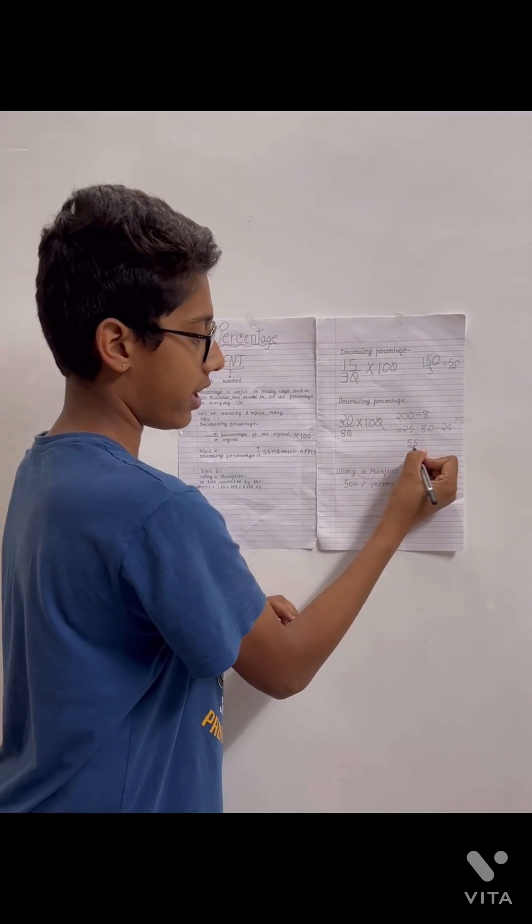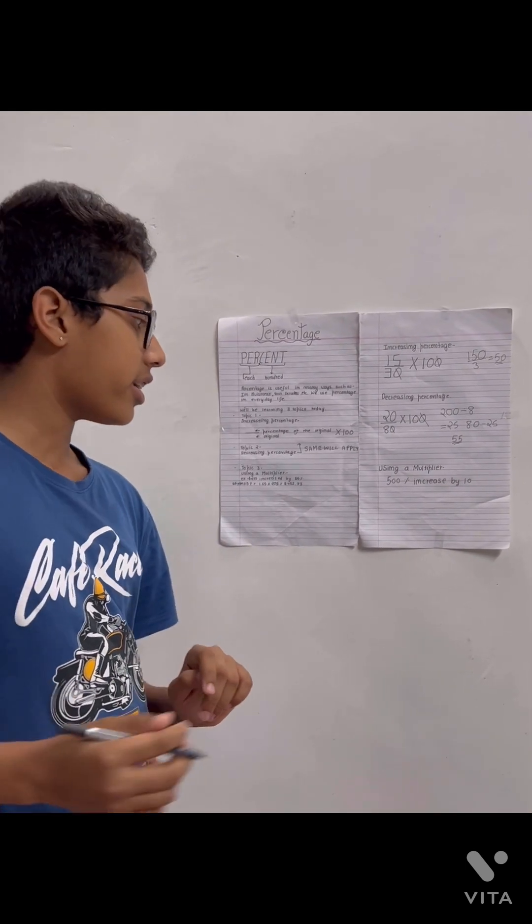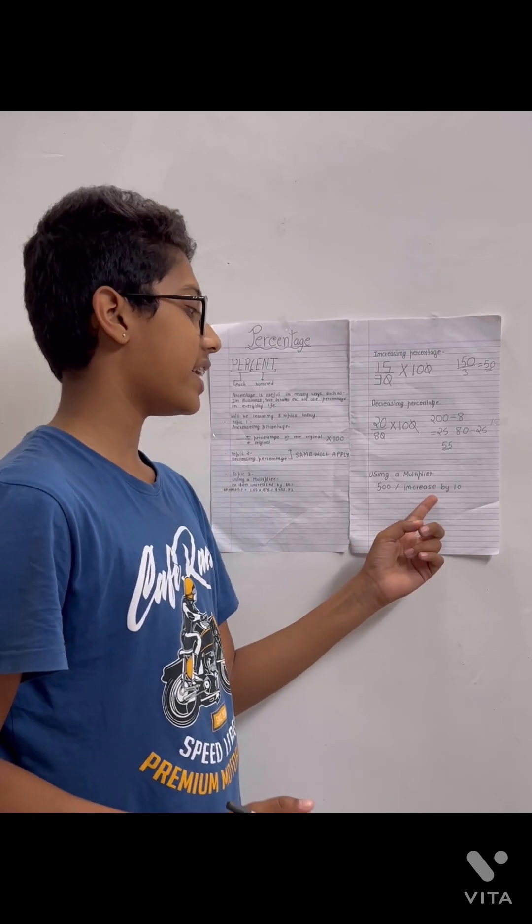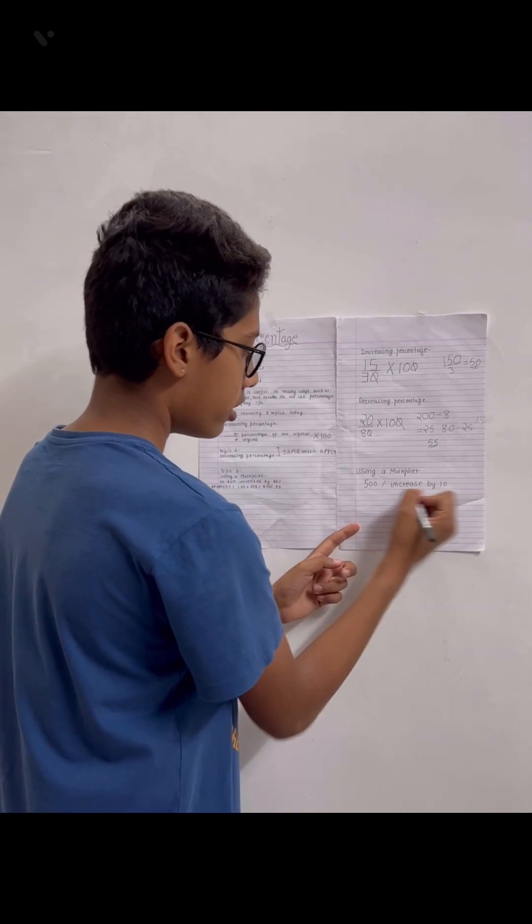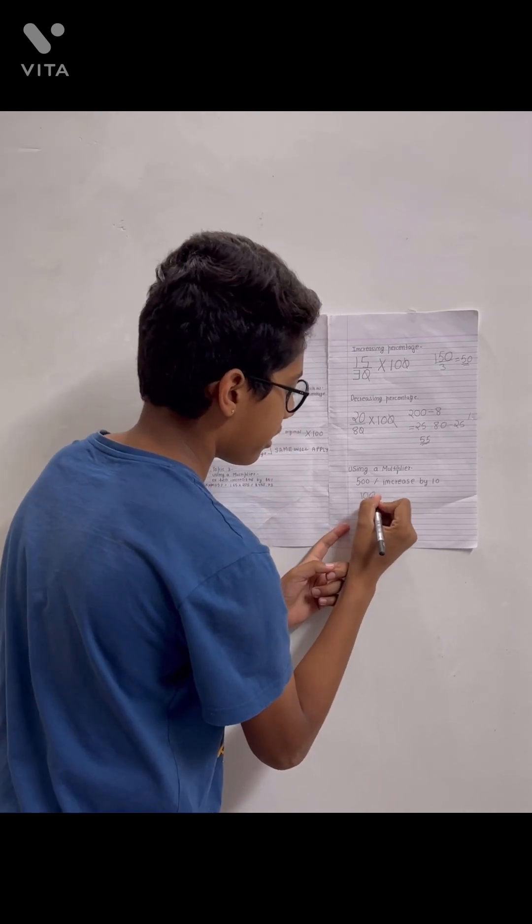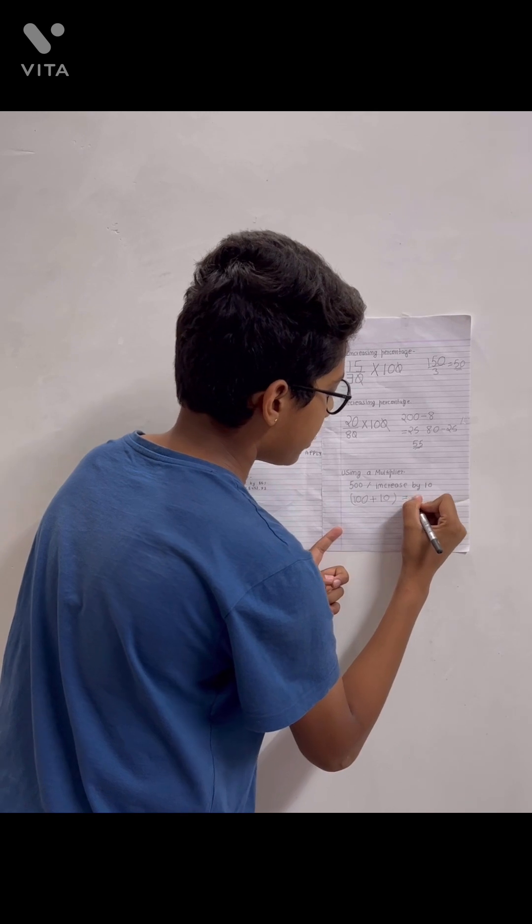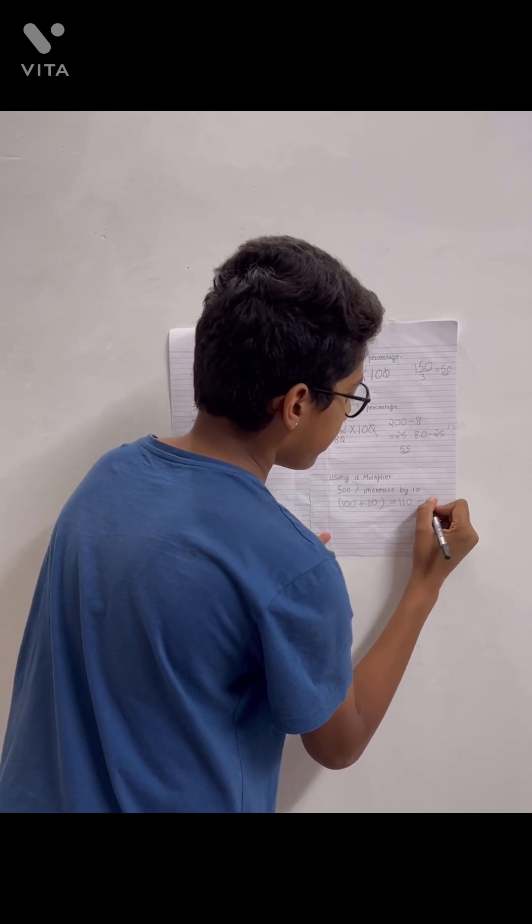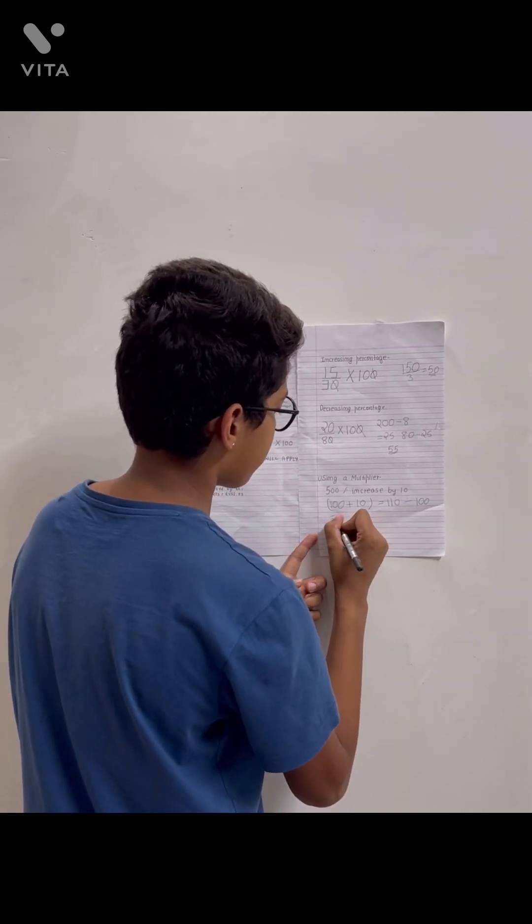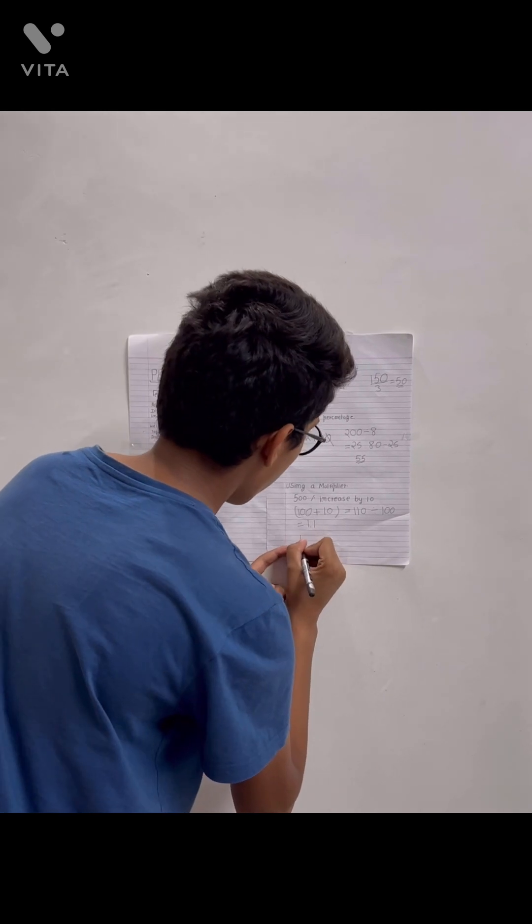Now we'll use the most convenient way using a multiplier: 500 increased by 10. So 100 plus 10 equals 110. Divided by 100 equals 1.1. Now we multiply 1.1 into 500, that is 550.